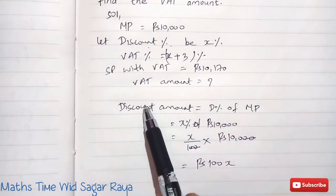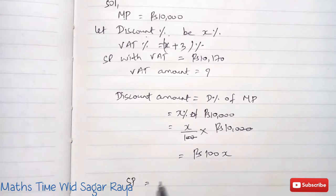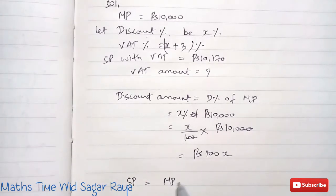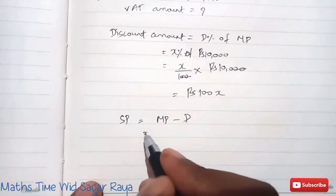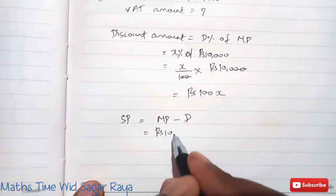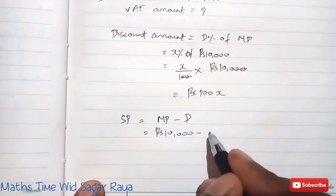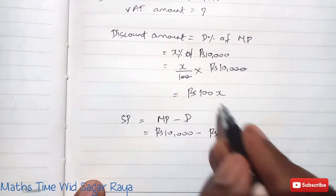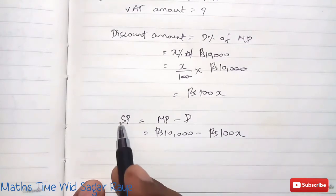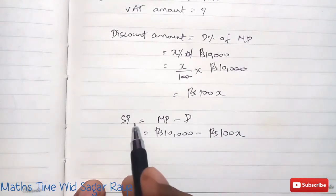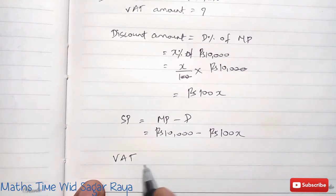Now we know MP and we know discount, so we can find SP. The selling price formula is: SP equals MP minus discount. MP is 10,000 and discount is 100X, so SP equals 10,000 minus 100X.